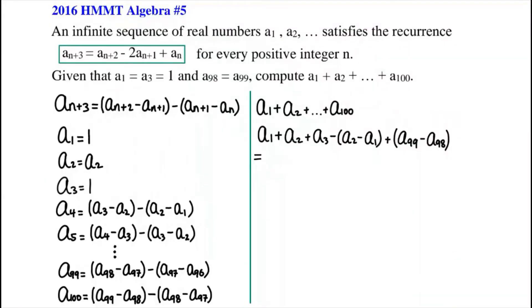This problem is from the 2016 HMMT Algebra problem number 5. An infinite sequence of real numbers a1, a2 satisfies the recurrence that an plus 3 equals an plus 2 minus 2 times an plus 1 plus an for every positive integer n. Given that a1 equals a3 equals 1 and a99 equals a98, we have to find the value of a1 plus a2 all the way to a100.